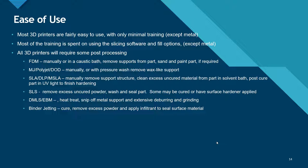SLA, DLP, and MSLA can typically have supports manually removed, and then excess material is cleaned from the uncured part in a solvent bath before the part is cured in UV light to harden it. SLS requires removal of excess uncured powder, and the part must be washed and sealed, and sometimes cured or surface-hardened. DMLS and EBM require heat treatment and must be cut off from the metal support, with extensive deburring and grinding. Binder jetting requires the part to be cured, excess powder removed, and an infiltrant applied to seal the surface.